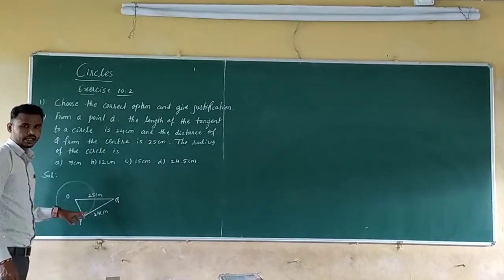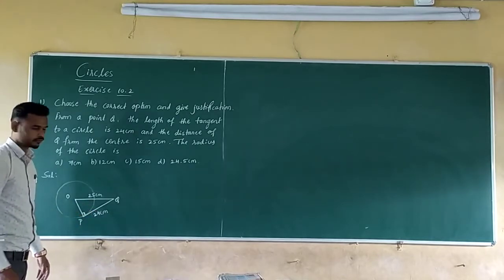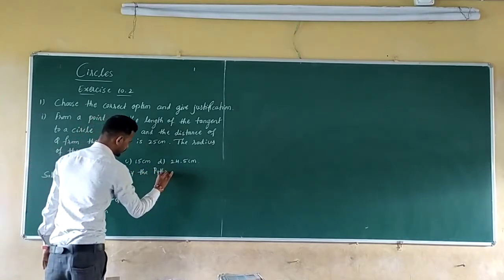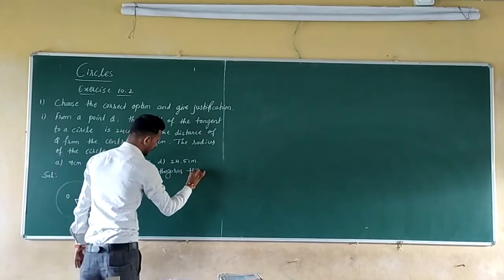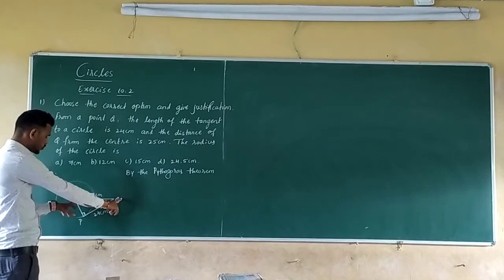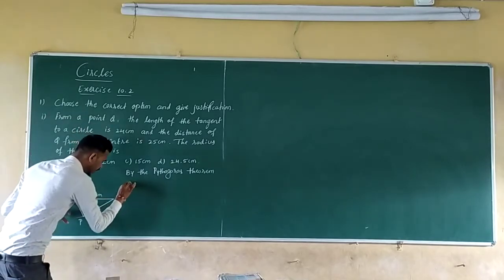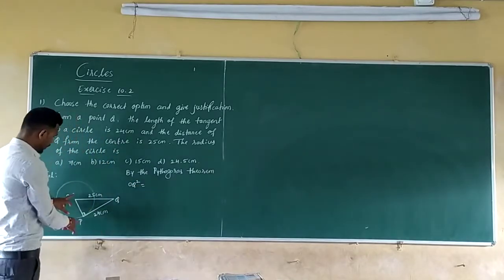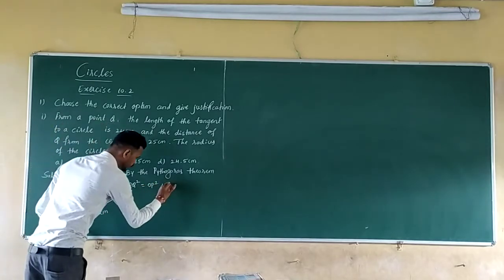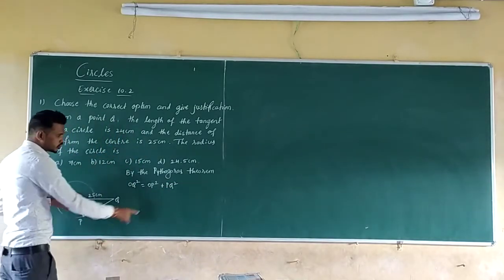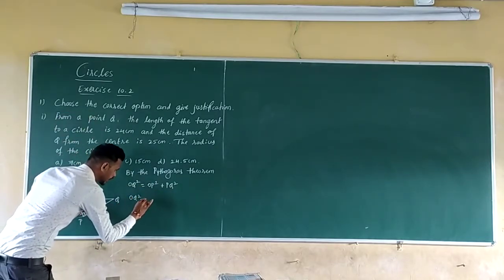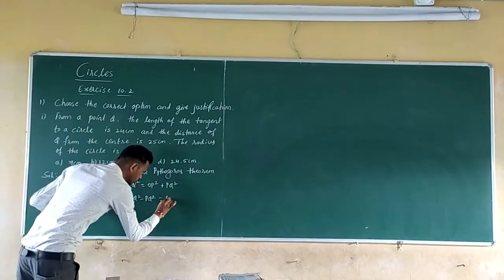The distance of Q from the center is 25 cm. Now find the radius O. This angle will become 90 degrees by Theorem 1 — the radius and the tangent are perpendicular to each other. So this becomes a right-angled triangle. Use the Pythagorean theorem. The side opposite to the right angle is the hypotenuse — here OQ is the hypotenuse. So OQ² = OP² + PQ².